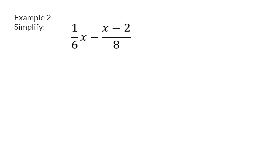In example 2, we once again have 2 fractions that need to be simplified, and I'm going to start off by writing the x in the numerator, and in the second fraction, I'm going to write the numerator in a bracket. Adding this bracket is very helpful when there's a minus in front of a fraction that has more than one term in the numerator. Now, I can get the common denominator, which will be 24.